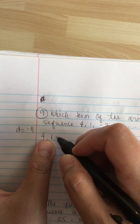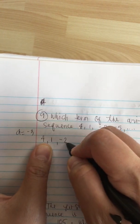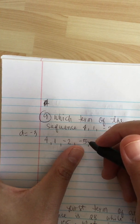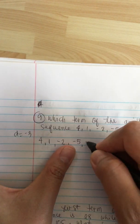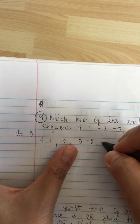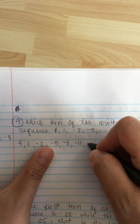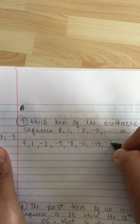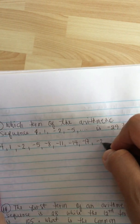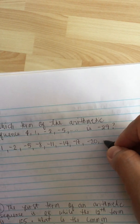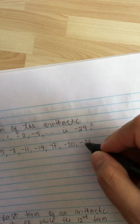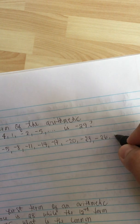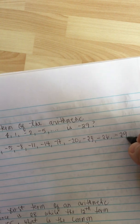And then 1 minus 3 is minus 2. Minus 2 minus 3 is minus 5. Minus 5 minus 3 is minus 8. And minus 8 minus 3 is minus 11. Minus 11 minus 3 is minus 14. Minus 14 minus 3 is minus 17. And minus 17 minus 3 is minus 20. And minus 20 minus 3 is minus 23. Minus 23 minus 3 is minus 26. And minus 26 minus 3 is minus 29.